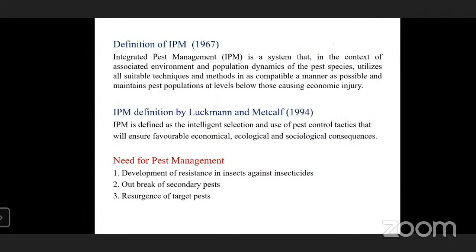The definition given by FAO in 1967 states that integrated pest management is a system that, in the context of the associated environment and population dynamics of the pest species, utilizes all suitable techniques and methods in a compatible manner, and maintains pest populations below those causing economic injury.